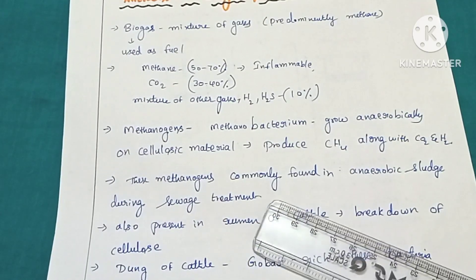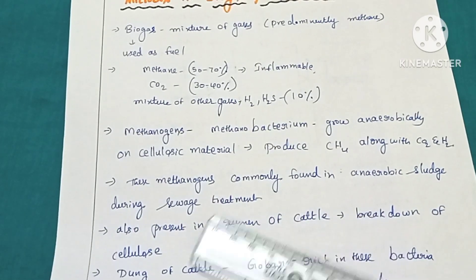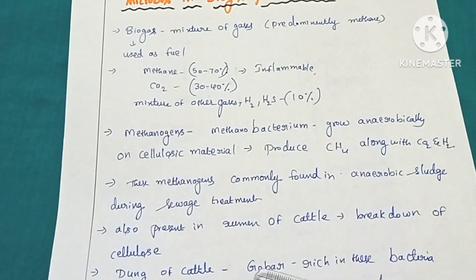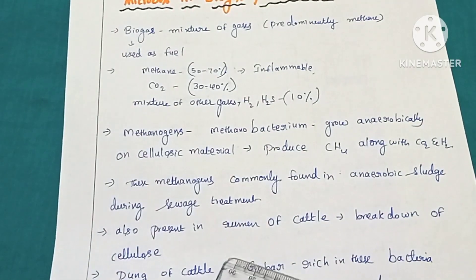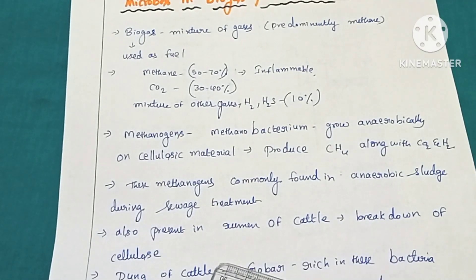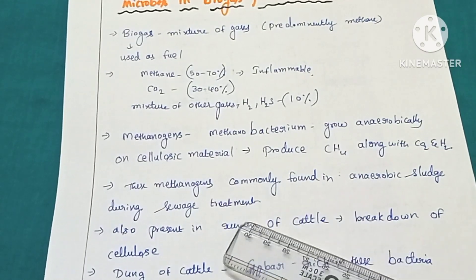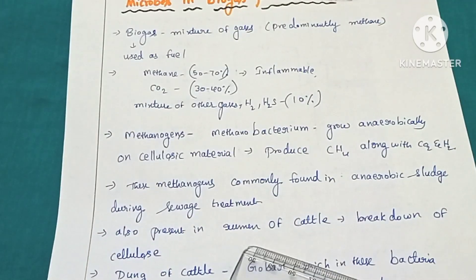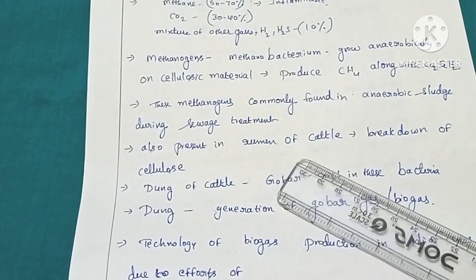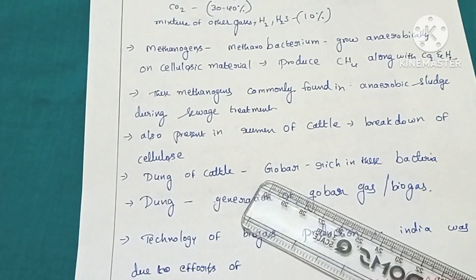In the anaerobic sludge digesters, the methanogenic bacteria digest the flocs and release biogas. Anaerobic sludge digesters are also present in the rumen of cattle. In the cattle's digestive system, these methanogenic bacteria digest bacteria, fungi, and organic matter and produce biogas. Because cattle have a rumen, they are called ruminants.